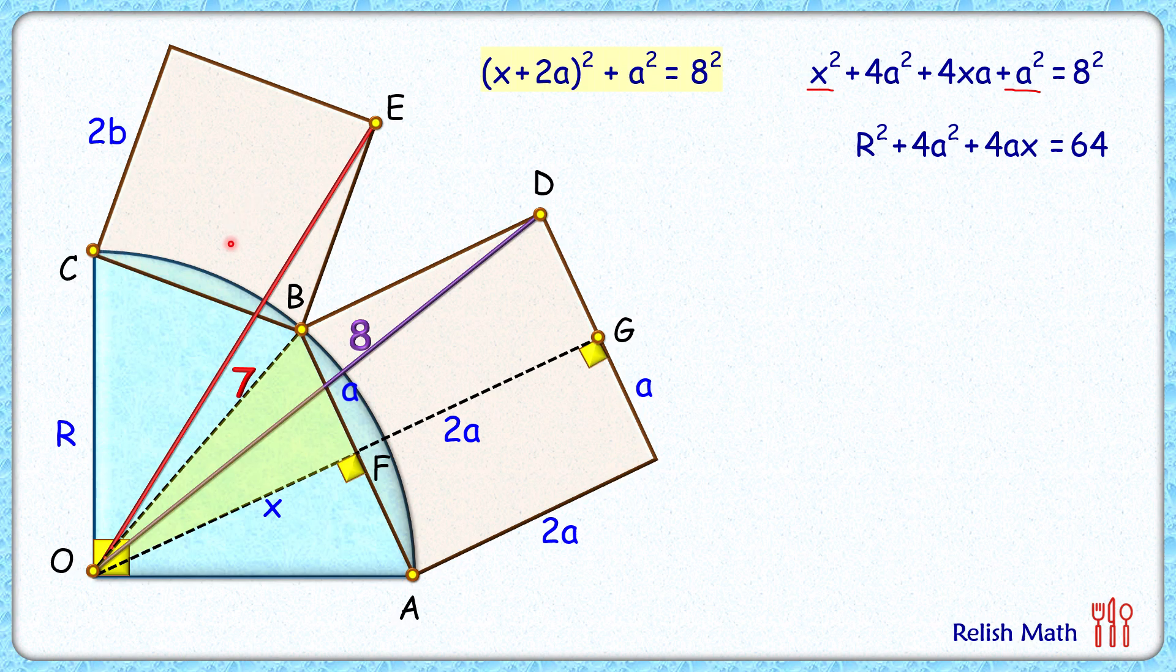Same way we'll obtain the equation from our second square. We'll follow the same step. From point O we'll drop a perpendicular on BC which is also a perpendicular bisector. Let's assume OH length is y cm. When we extend OH, it will also be perpendicular bisector of the other side. This HG length is the same as 2b, and here this length will be b + b cm.